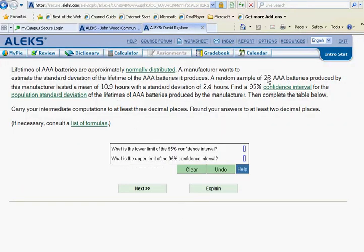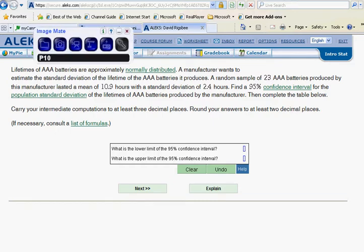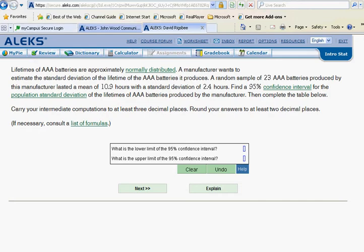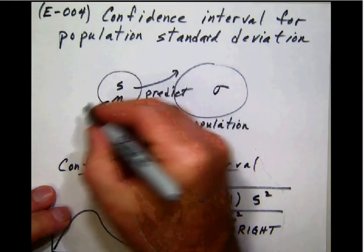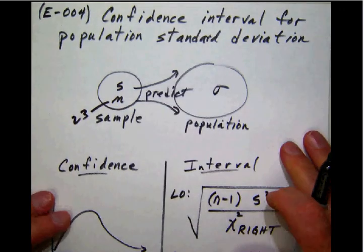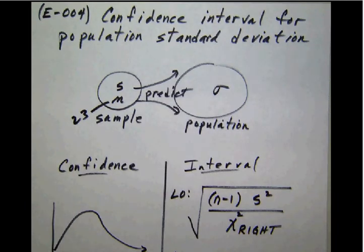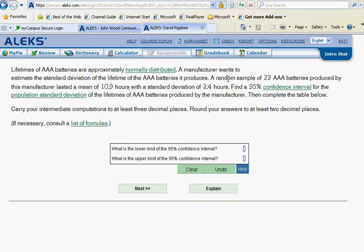Notice here that we have a random sample of 23 AAA batteries. So that tells us that we are dealing with a sample size of 23. Furthermore we have a mean of 10.9, so that's our x-bar, and a standard deviation of 2.4. There's our s.